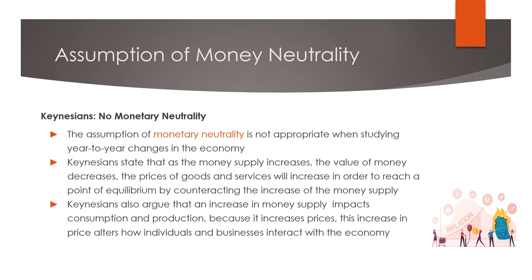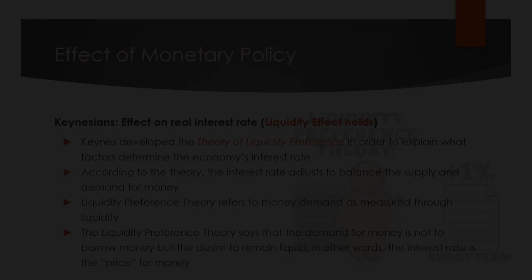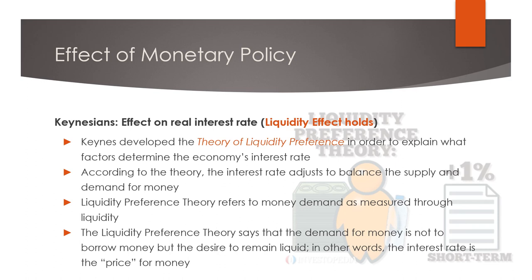Regarding the effect of monetary policy: for the Classicals, there is no effect on real interest rates — they developed the Fisher effect. The Fisher effect, created by economist Irving Fisher, refers to a one-to-one adjustment of the nominal interest rate to the inflation rate. When the rate of inflation rises, the nominal interest rate rises by the same amount, and the real interest rate stays the same. While the Keynesians developed the theory of liquidity preference. Keynes developed this theory to explain what factors determine the economy's interest rate. The interest rate adjusts to balance the supply and demand for money. Liquidity preference theory refers to money demand as measured through liquidity — the demand for money is not to borrow it, but the desire to remain liquid. In other words, the interest rate is the price for money.